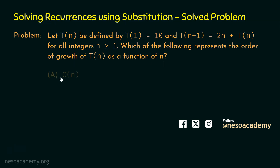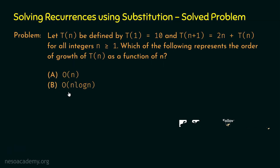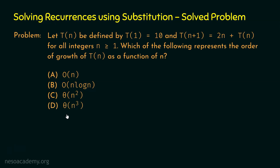Is it option A, O(n)? Is it B, O(n log n)? Is it option C, theta of n squared? Or is it option D, theta of n cubed? This question has been asked in ISRO 2011.